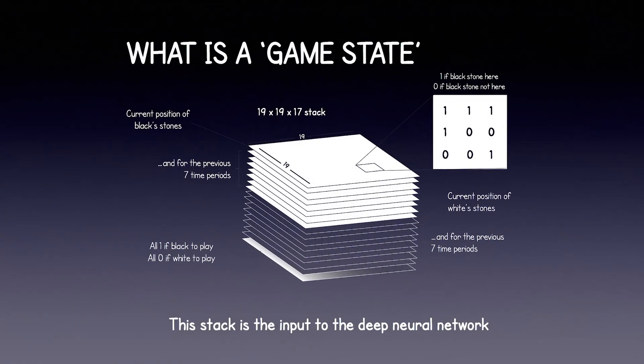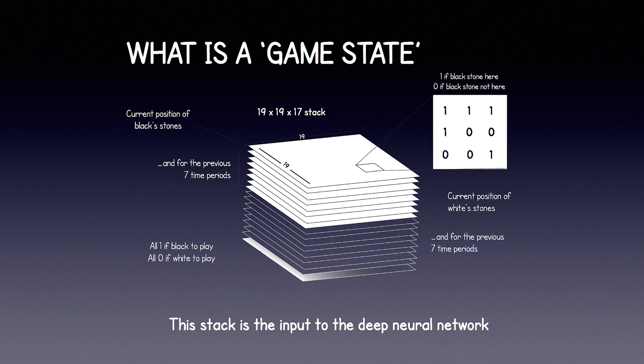First, let's see what the encoded game state looks like that's being passed into the first layer, specifically for the game of Go. Chess and Shogi are slightly different, but the concepts are exactly the same. The Go board is 19x19, and so is the input. The current position of all of Black's pieces are encoded in the grid, followed by identical grids for the previous 7 time periods. Then we have White's current position, followed by the previous 7 time periods for White. Finally, we've got the current player's turn encoded on a 19x19 grid — all 1 if Black is to play, and all 0 if White is to play. The result is a 19x19x17 stack, which goes into the neural network.